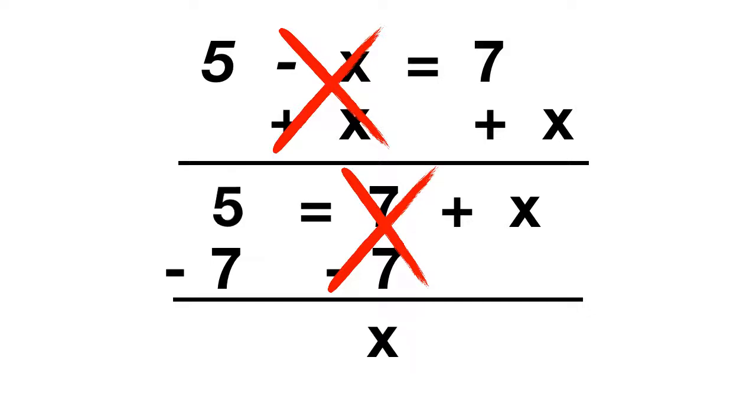On the left side of the equation, 5 minus 7 gives us what? Well, 5 minus 7 gives us negative 2. And so our answer is that negative 2 is equal to x.